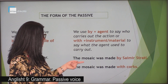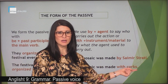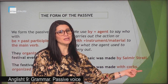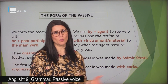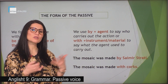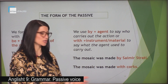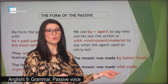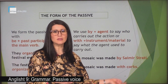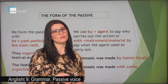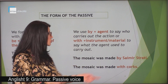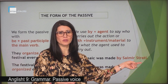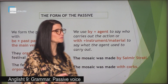In this case, the mosaic was made by Saimir Strati — we use the word 'by' plus the agent. The agent is a person, the person who has done the action. The mosaic was made with corks — we have the word 'with' and a material. So we cannot use 'with' with an agent, with a name of a person.